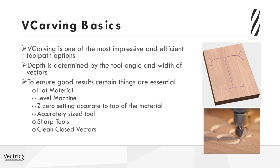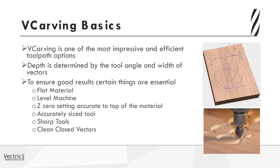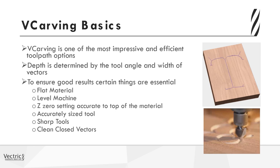Here are some of the points we need to think about that can affect the outcome of our v-carving to ensure we have the best results possible. We want to make sure that we have a flat material and that the machine is level, so that the tool goes into the material at an equal depth per vector width on all pieces we are cutting, so that we're not left with a piece that is unevenly cut. Another thing we want to make sure of is that the tool's Z0 is set accurately to the top of the block. Setting to the top of the block eradicates the necessity of accurately measuring the thickness of the material and ensures that the tool enters and leaves the material where it should to create a sharp point.